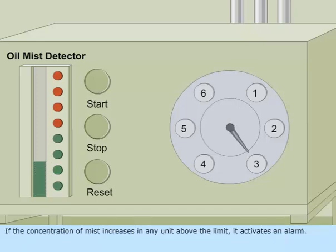If the concentration of mist increases in any unit above the limit, it activates an alarm.